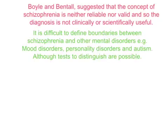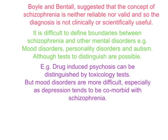In clinical practice, it is often difficult to define boundaries between schizophrenia and other disorders — for example, mood disorders, personality disorders, and developmental disorders such as autism — although it is sometimes possible to use additional tests to make the distinction. For example, drug-induced psychosis can be differentiated by carrying out extended observations and toxicology tests. However, particularly in the case of mood disorders, it is more difficult, especially as depression is frequently comorbid with schizophrenia. The ICD and DSM have tried to address the problem of symptom overlap by proposing mixed disorder categories, such as schizoaffective disorder or post-psychotic depression. However, the validity of such categories has been questioned.